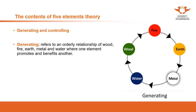The generating refers to an orderly relationship of wood, fire, earth, metal, and water, where one element promotes and benefits another. It is very important that the relationship among these elements has an order, and this order cannot be changed. The wood can generate the fire, the fire can generate the earth, the earth can generate the metal, the metal can generate the water, the water can generate the wood. The order is very important — if you change the order, it doesn't make sense in this theory. For example, the wood can generate the fire, but the wood cannot generate the earth, because the order is that fire generates the earth.